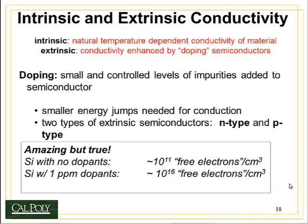Intrinsic semiconductors are those that we've already talked about — silicon, germanium, arsenic. They have a natural temperature-dependent conductivity. They don't conduct electricity very well because they have a moderately sized band gap. But if I add thermal energy to the system by heating up the material, I can get it to conduct more electricity. That's called intrinsic semiconductor behavior.